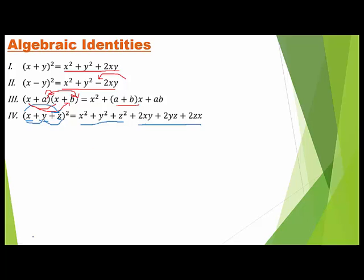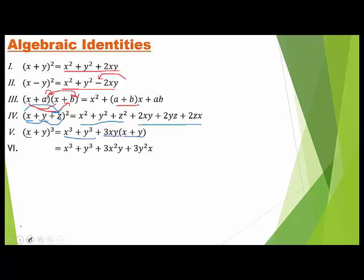Our next identity is: (x + y)³ equals x³ plus y³ plus 3xy(x + y). Expanding by multiplying 3xy with (x + y), we get: (x + y)³ equals x³ plus y³ plus 3x²y plus 3y²x.